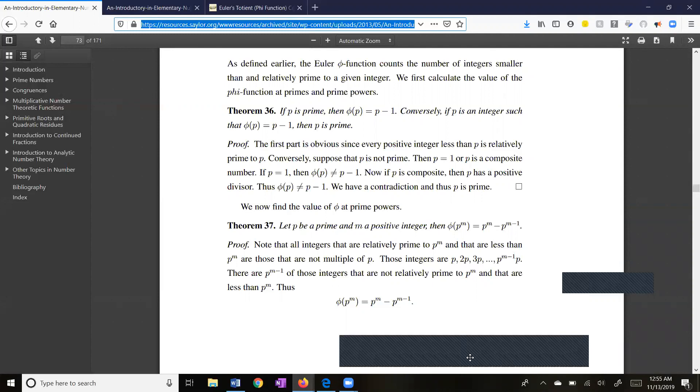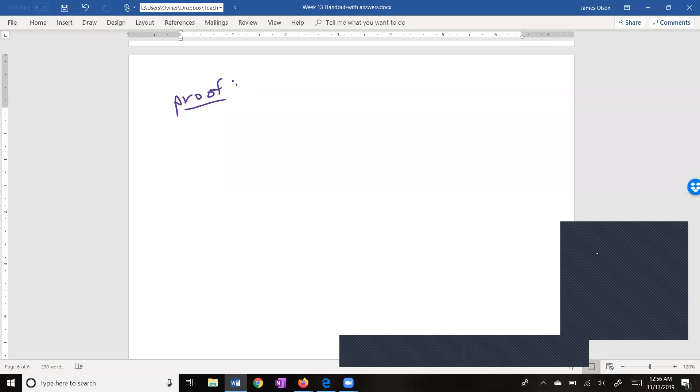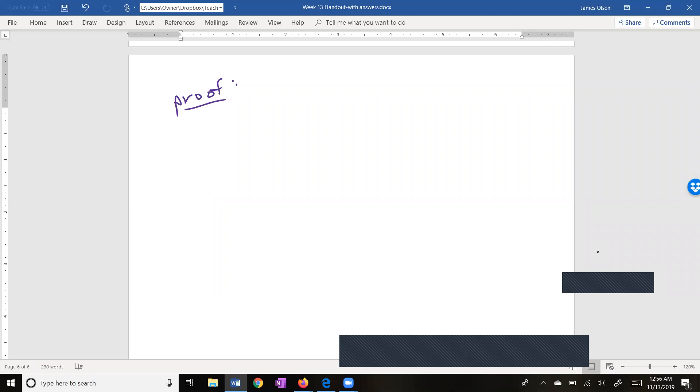This is actually a very nice little proof. But let's think about what it means first. Here's the statement I'm trying to prove. If p is a prime number and we have a positive exponent, phi of p to the m is equal to p to the m minus p to the m minus one. Let's do the proof. Okay, let's write down what we're trying to do. We want to count the numbers less than p to the m that are relatively prime to p to the m.